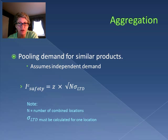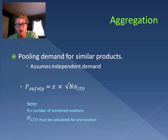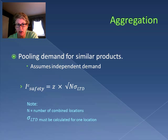When we bring together all the products that are similar and pool them together, we're going to have a combined safety stock. This equation should look somewhat familiar because we're creating a safety stock by using a z-statistic associated with the service level and a standard deviation of the lead time demand. What's different is that we're using the standard deviation of lead time demand for one location and then multiplying it by the square root of the number of locations that we're combining.